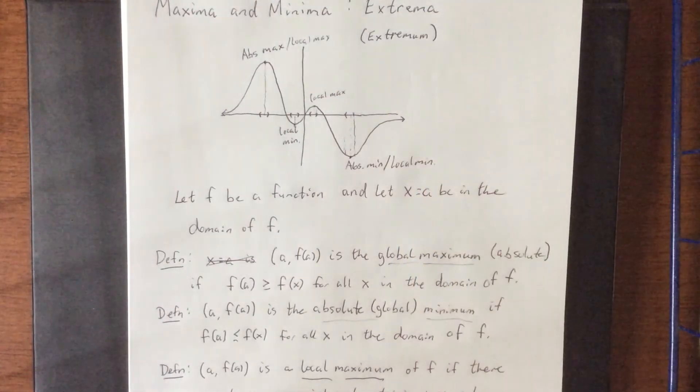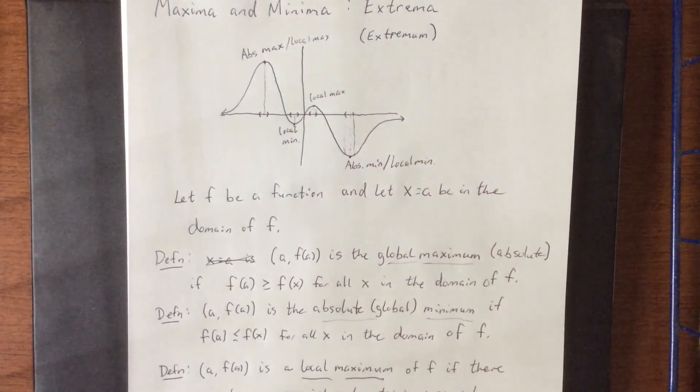So again, usually the only place where an absolute is not also a local is where it's the end point for a domain for the function. More on that in the next video.